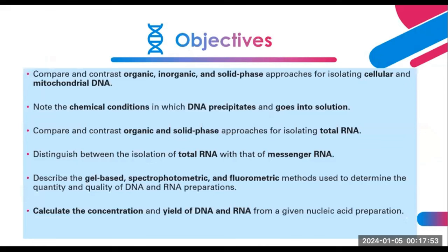Our objectives include the following: we need to compare and contrast inorganic, organic, and solid phase approaches for isolating cellular and mitochondrial DNA; note the chemical conditions in which DNA tends to go out into solution and form large aggregates; compare and contrast organic and solid phase approaches for isolating total RNA; distinguish between the isolation of total RNA and messenger RNA; describe gel-based, spectrophotometric, and fluorometric methods to determine the quantity and quality of DNA and RNA preparations; and know how to calculate DNA and RNA yields from a given nucleic acid preparation.